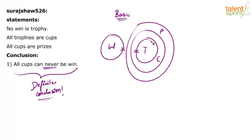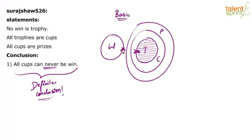What happens if all cups are made win — if all the cups go inside win? All the cups cannot go inside win. Why? Because all the trophies are inside cups, so if you take all the cups inside win, the trophies will also go inside win. But the statements clearly say wins and trophies should not cross each other. So trying to make all cups win would violate the statement, meaning all cups can never be win is true.